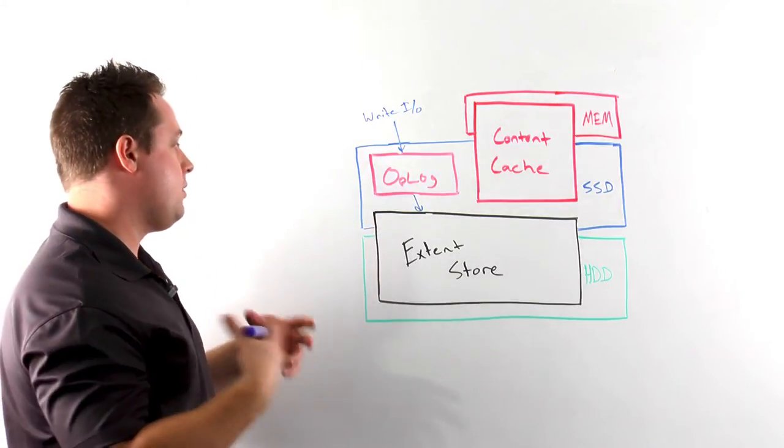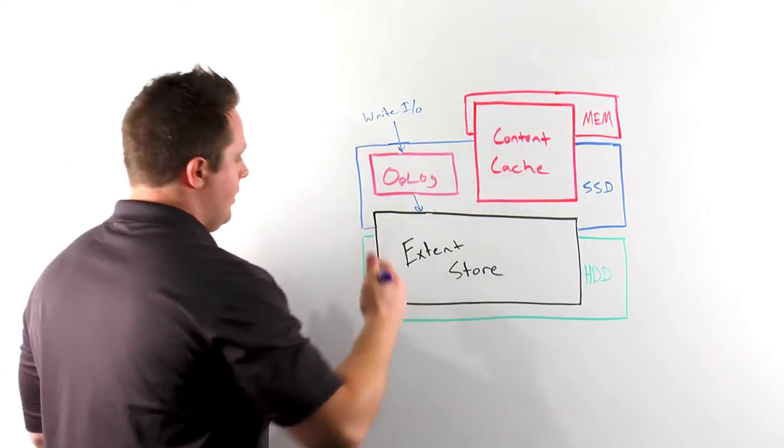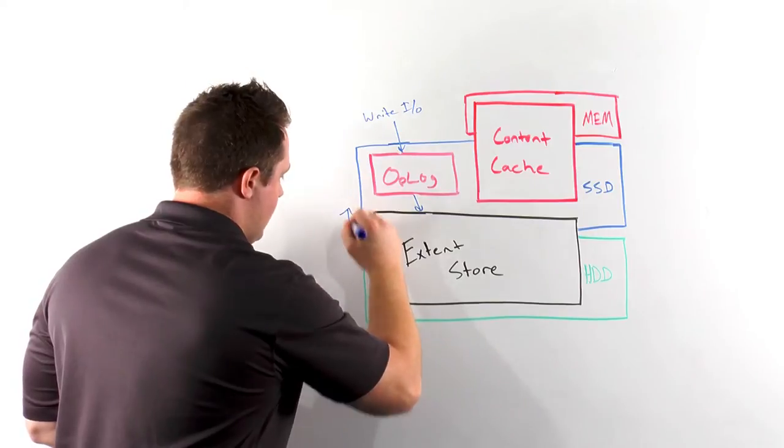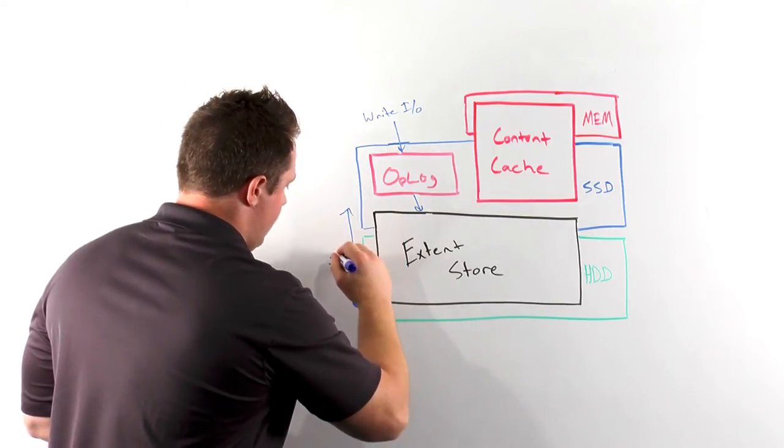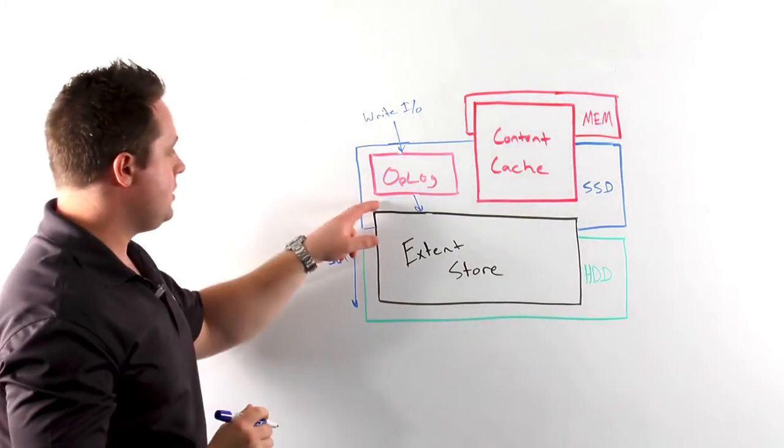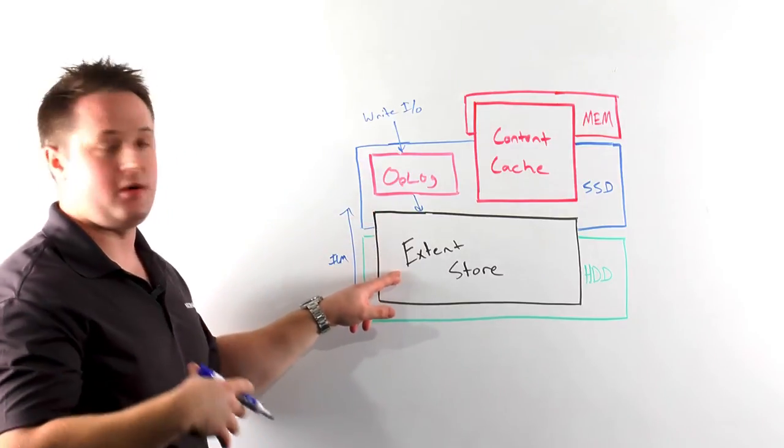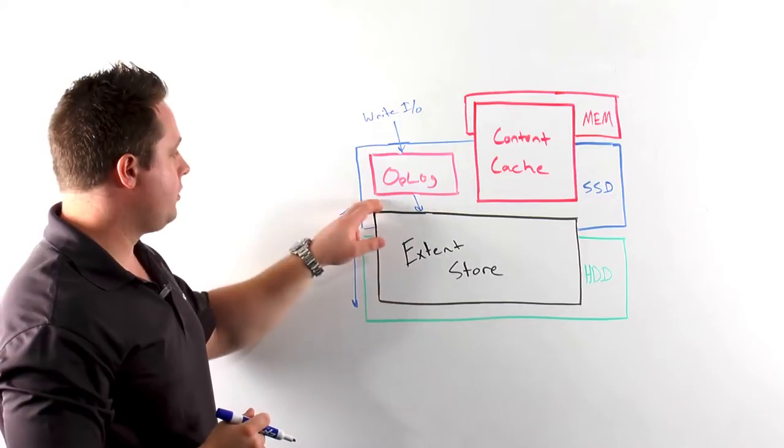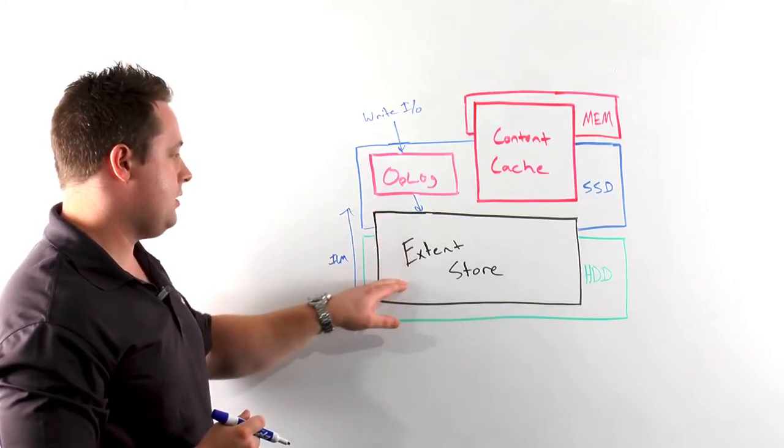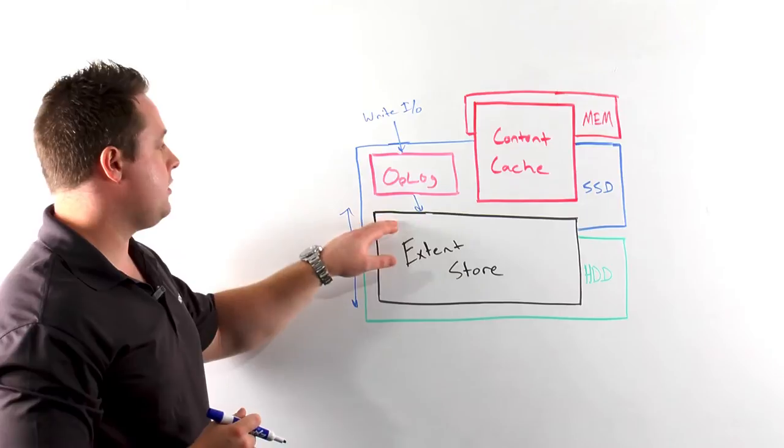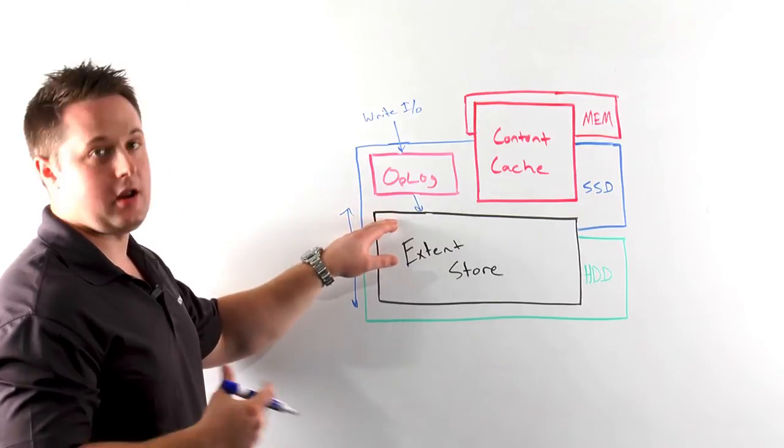Within the extent store, we have what we call ILM or information lifecycle management. ILM is responsible for choosing the optimal tier placement for data based upon its I/O patterns and hotness. Colder, older data will be down-migrated into the HDD tier to free up more capacity on the SSD tier for newer, hotter data.